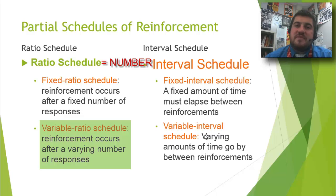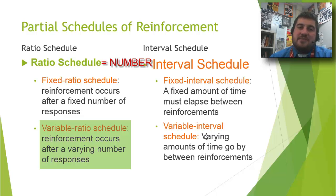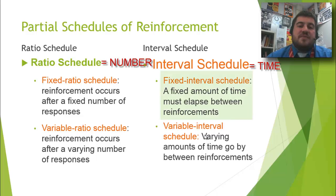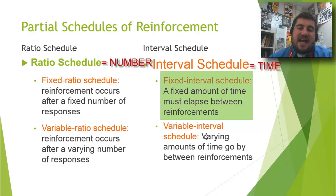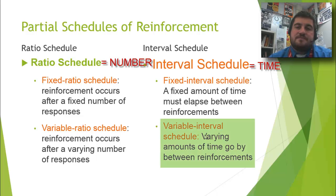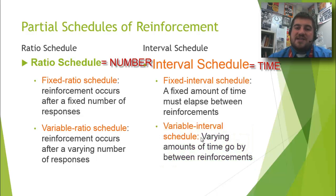Variable ratio involves a varying number of responses — the rat hits the bar once and gets food, next time it's three, then 27, then five. Fixed interval means a fixed amount of time must elapse before the subject is rewarded — no matter how many times the rat hits it, it won't be rewarded until two minutes has passed. Variable interval means varying amounts of time go by between reinforcements: 30 seconds, five minutes, an hour, three minutes — it varies.